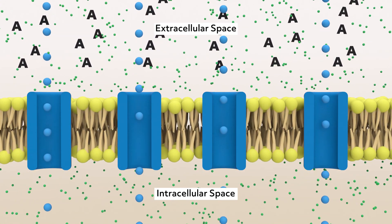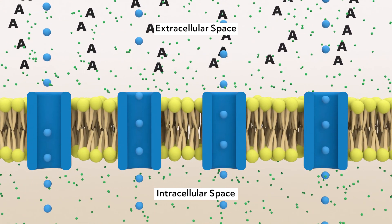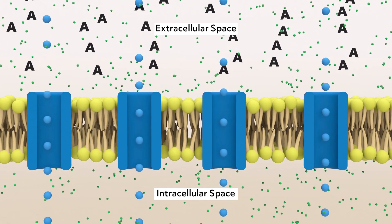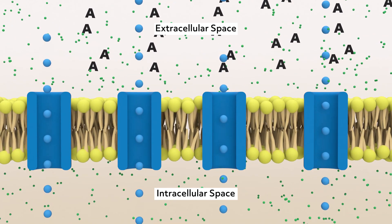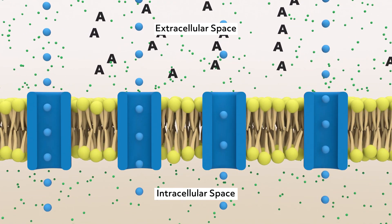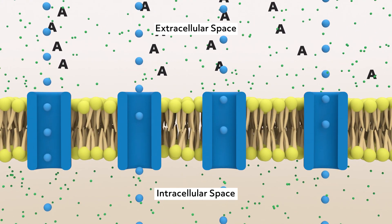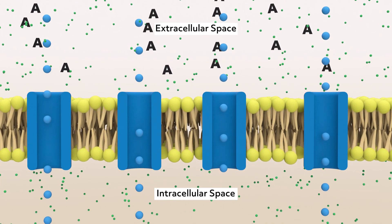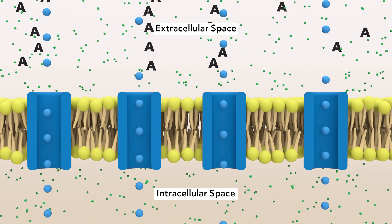However, A is too polar to diffuse through the cell membrane, and there are no proteins embedded in the membrane to allow facilitated diffusion for A. What happens? Water, which can quickly pass through the membrane via channel proteins, will begin to leave the cell at a higher rate than it enters, with a net movement to the area with a high concentration of A, thus lowering the concentration. This is an example of osmosis.